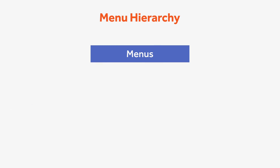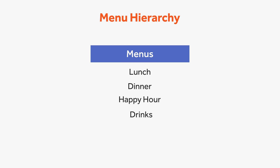Menus are the highest tier and are used to break down what you serve into separate categories. For example, you could create menus for lunch, dinner, happy hour, and drinks.